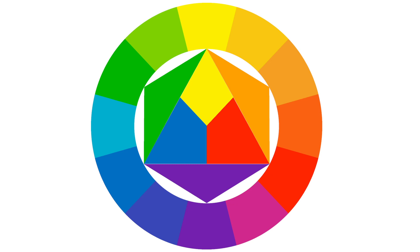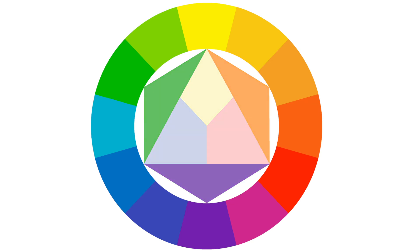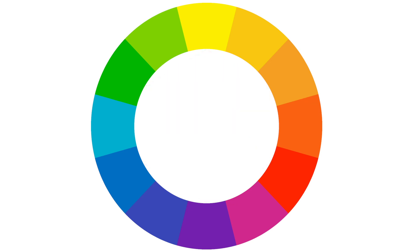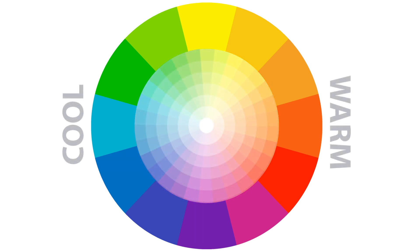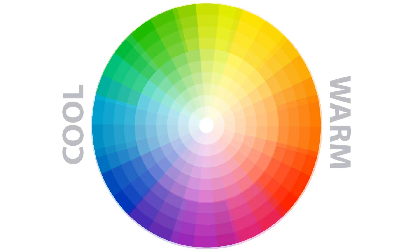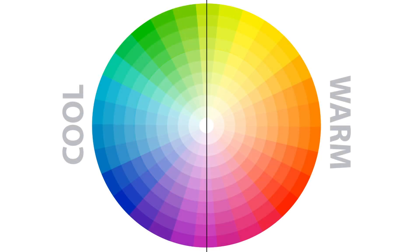We also have six tertiary colors, which are colors made from primary and secondary colors, such as blue-green or red-violet. Interestingly, when you draw a line through the center of the wheel, you separate the warm colors — reds, oranges, and yellows — from the cool colors — blues, greens, and purples.